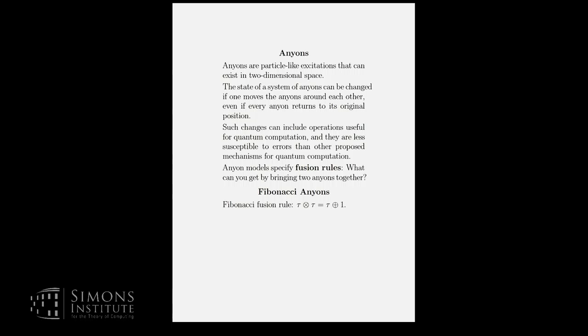The plus is alternative options of what can happen. So vacuum is called one because if you bring a vacuum together with anything, you got the anything. It acts like a unit for the multiplication. This equation, if you read it in terms of numbers, if you pretend that tau is a number and times and plus are ordinary arithmetical operations, that quadratic equation has two solutions, the positive one of which is the golden ratio and that gets you pretty close to Fibonacci already.